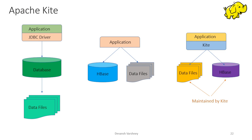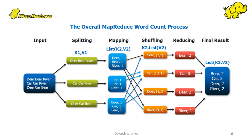MapReduce is a processing technique and framework based on Java for distributed computing. As the name implies, the reduce task is always performed after the map job. The map job splits the input dataset into independent chunks; splitting takes place where individual elements are broken down into tuples — key-value pairs. The reduce framework then sorts the outputs of the map jobs, which are then input to the reduce task.